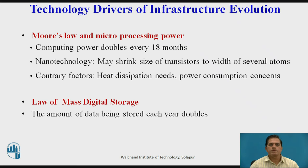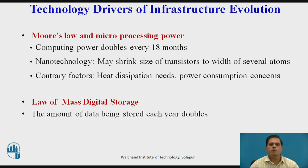The technology drivers of infrastructure evolution include several important laws. First is Moore's Law, where microprocessing power doubles approximately every year — meaning data processing through processors increases continuously. A new technology that emerged under this is nanotechnology, which measures the size of transistors to the width of several atoms, shrinking transistor size dramatically. A contrary factor is heat dissipation, which requires reducing processing power, making power consumption concerns very important.